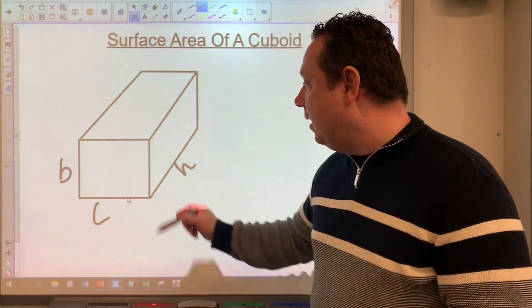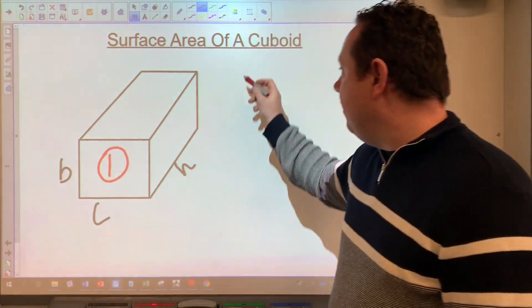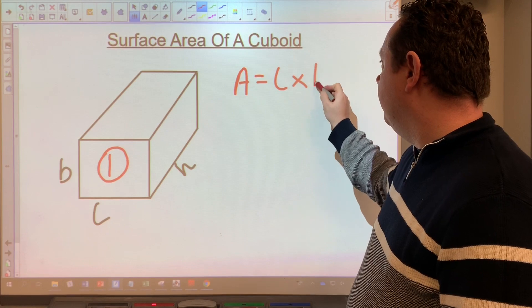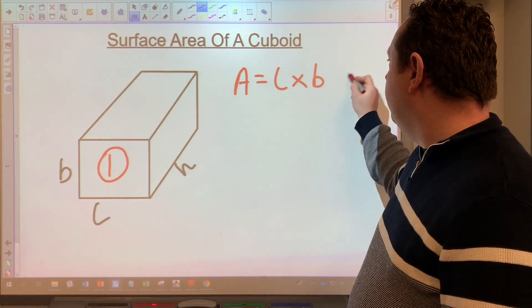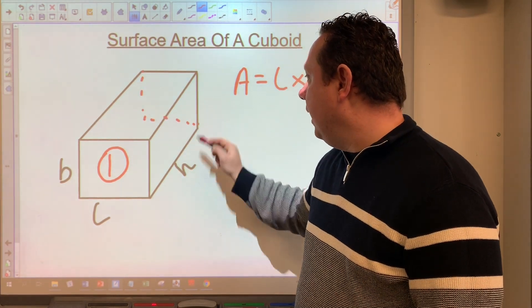So if we look at the first shape, if I just label this one number one, the area of number one is length times breadth. And I'm going to have two of them because there's going to be one here and then one hidden one at the back.